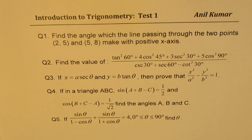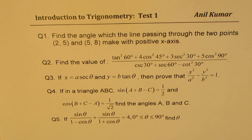Question number three: if x equals a secant theta and y equals b tan theta, then prove that x squared over a squared minus y squared over b squared equals 1. You can use the Pythagorean trigonometric identity to solve this question.